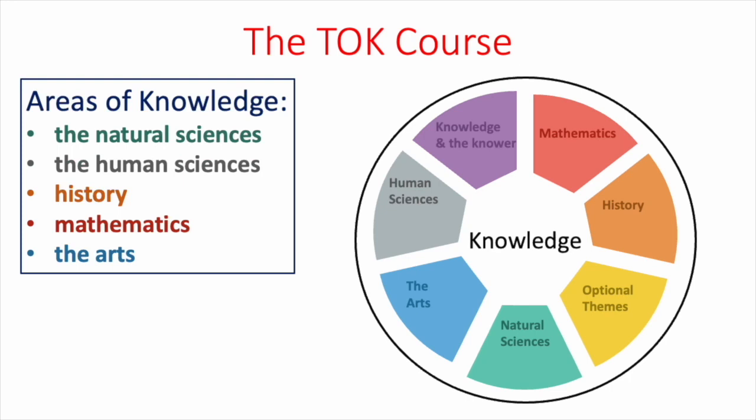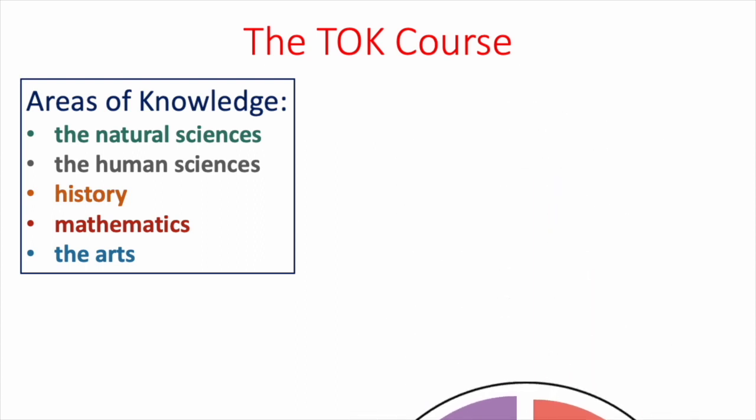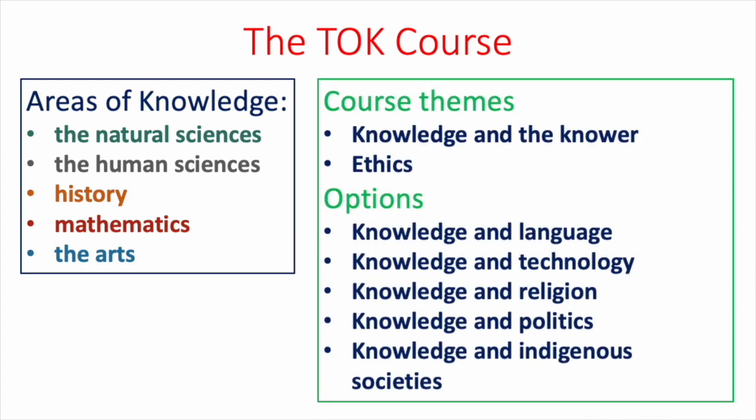The course is divided into three major sections: the five areas of Knowledge, of which Mathematics is one, and then there are five optional themes — students have to do two — as well as the obligatory theme, which is Knowledge and the Knower. With regard to the area of Knowledge that is Maths and the question of what do we know, the first thing to ask is: what is Mathematics really about?